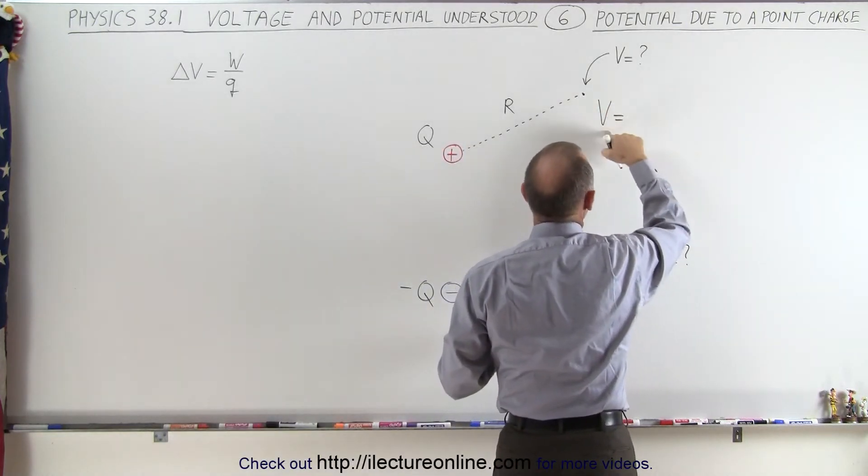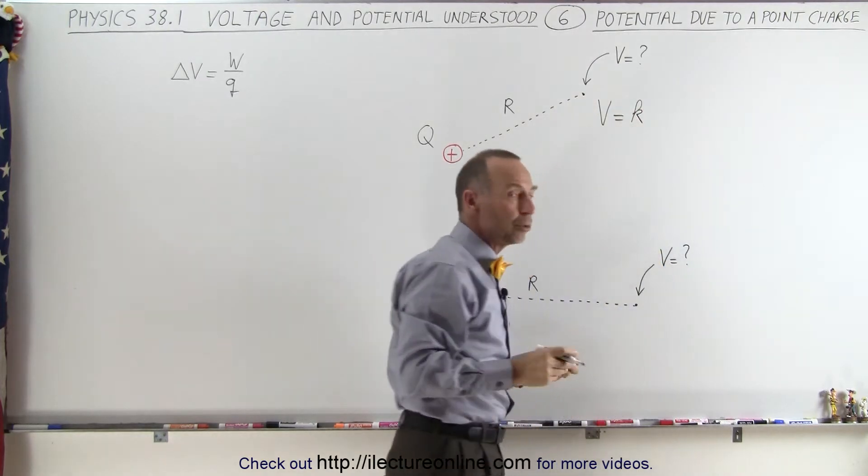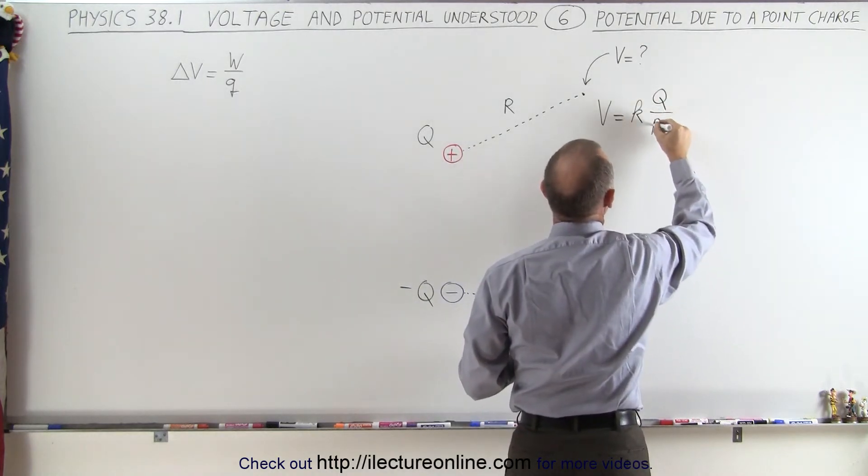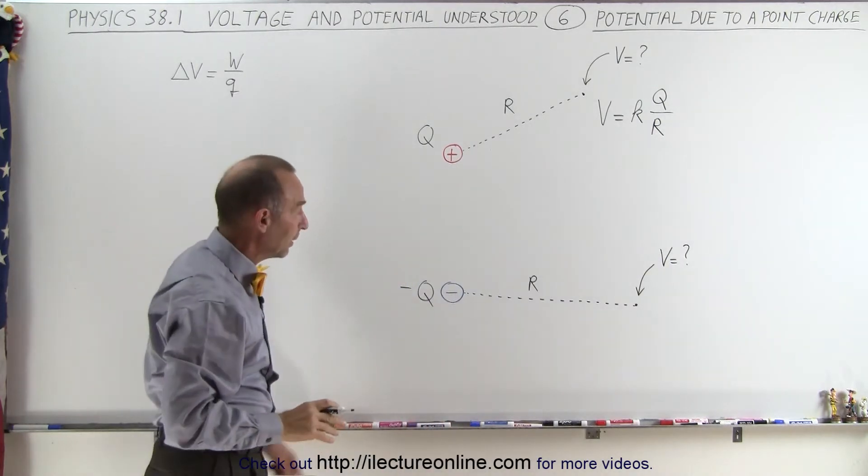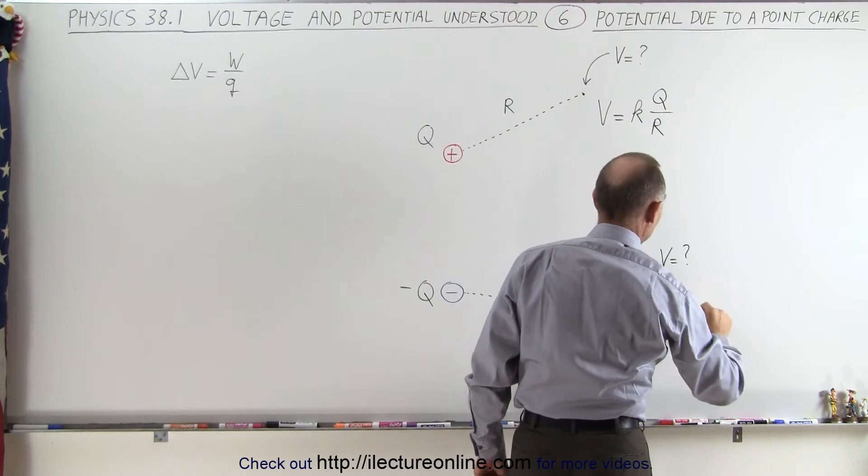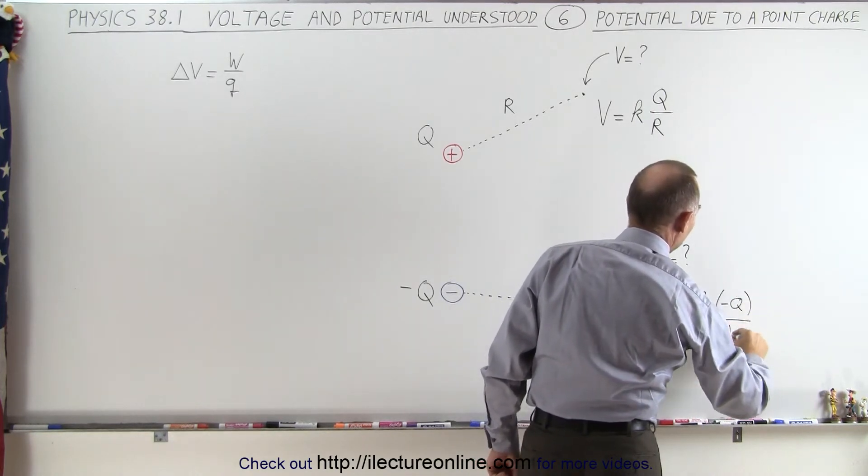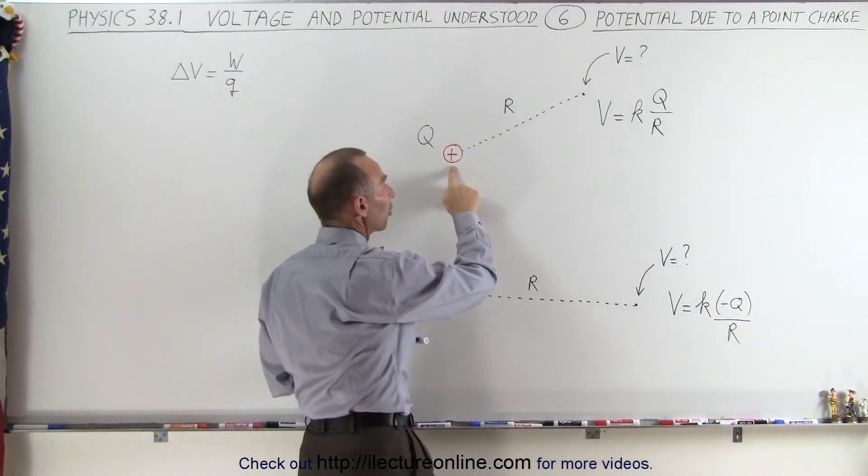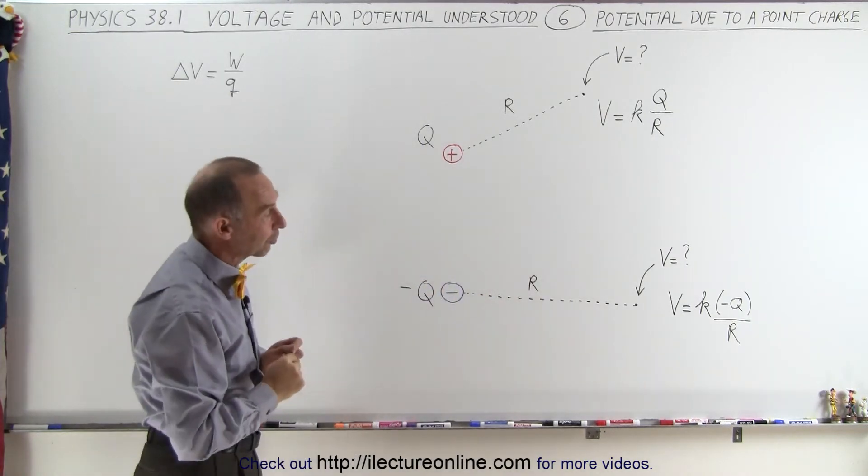The voltage at that location is equal to K, the same K that we use in Coulomb's law, times the charge that produces the voltage divided by the distance from that charge. It's as simple as that. Now if we have a negative charge, the equation then becomes V equals K times negative Q divided by R. So you can see that the only difference is that a positive charge produces a positive voltage and a negative point charge produces a negative voltage.